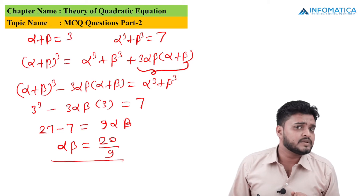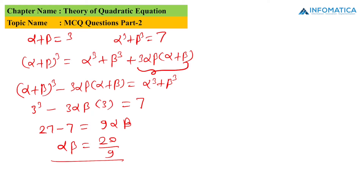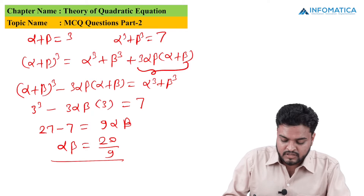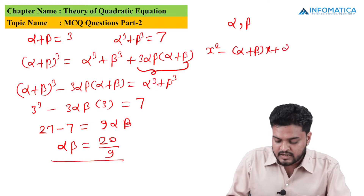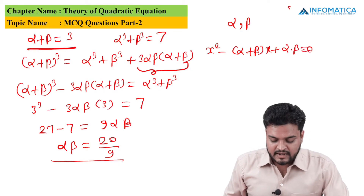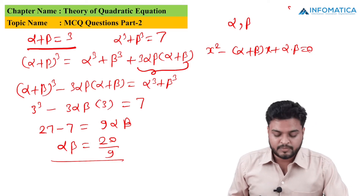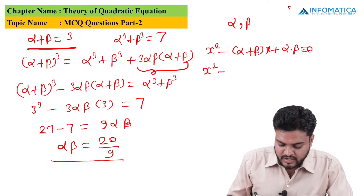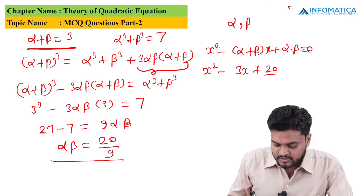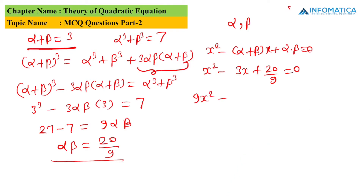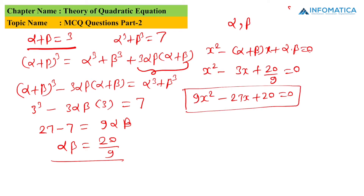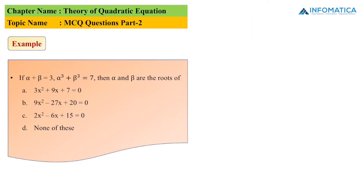Now we know sum of roots = 3 and product of roots = 20/9. Using the standard form x² - (alpha+beta)x + alpha·beta = 0, we get x² - 3x + 20/9 = 0. Multiplying through by 9: 9x² - 27x + 20 = 0. This matches option B, so option B is the correct answer.